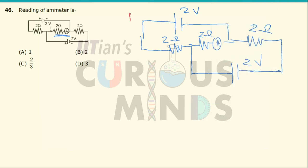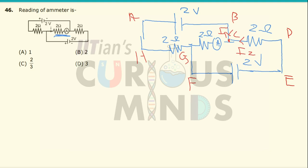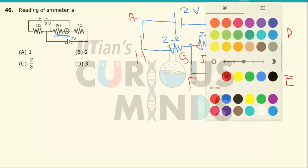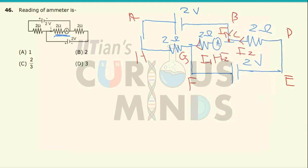Let me first mark the points as A, B, C, D, E, F, G, H. At point C, let the incoming current be equal to i1, and let the other incoming current at point C be equal to i2. So the outgoing current will be equal to i1 plus i2.